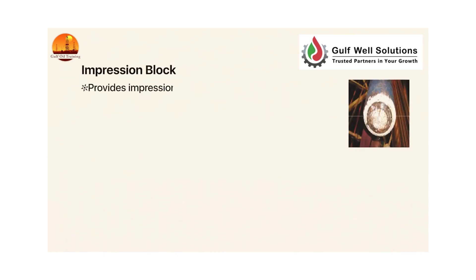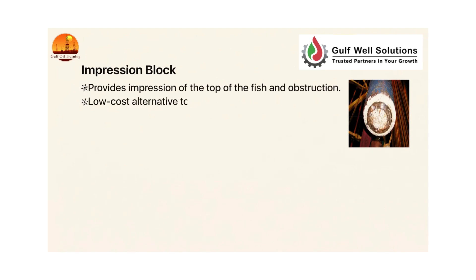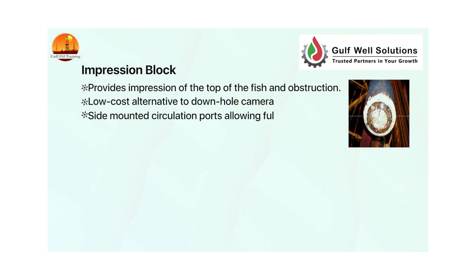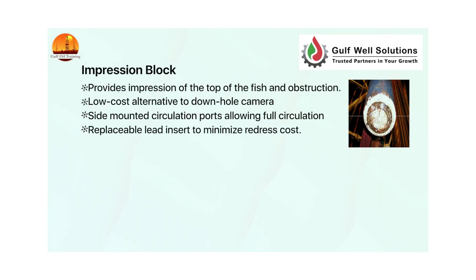Impression block: provides an impression of the top of the fish and obstruction. It is a low-cost alternative to a downhole camera. Side-mounted circulation ports allow full circulation. It has a replaceable lead insert to minimize redress cost.